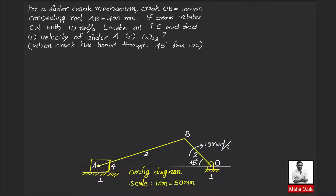Hello everyone. In this video we will be solving a problem on the velocity analysis of a slider crank mechanism using the instantaneous center method. The crank length is 100 mm, connecting rod length is 400 mm, and the crank is rotating at 10 radians per second in the clockwise direction. We have to locate all instantaneous centers and evaluate the velocity of the slider (point A) and the angular velocity of connecting rod AB, at the instant when the crank is at 45 degrees from IDC.